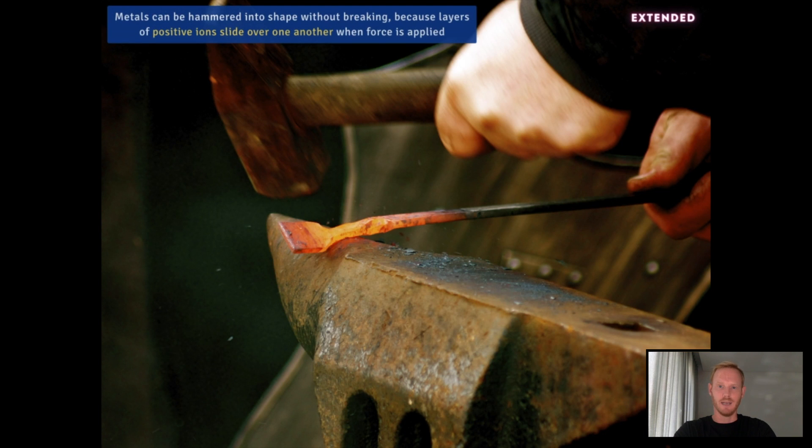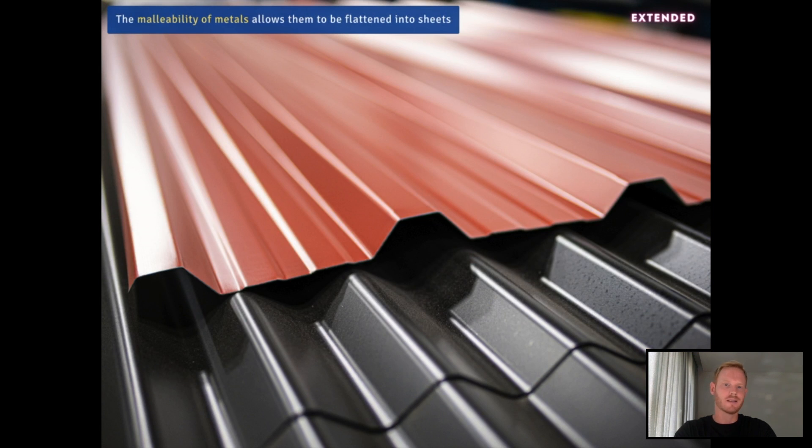Metals are also malleable, meaning they're pliable. They can be bent, hammered, or pressed permanently out of shape without breaking or cracking.